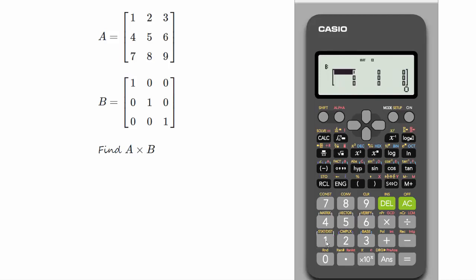And now we're putting the values in: 1 0 0, 0 1 0, 0 0 1. Press AC to save the matrix, and now both matrices are saved into the calculator's memory.